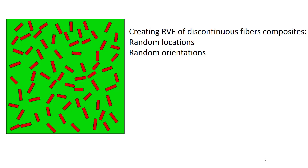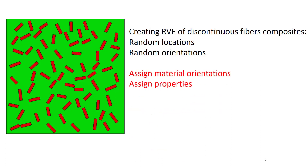Welcome to this video. In this series of videos, we are going to explain modeling an RVE of randomly distributed fiber reinforced composite. In this RVE, fibers have a random position and orientation, and we should have a plan to prevent fiber intersection. In the next video, we will explain how to assign properties and orientation to the fibers. In the third video, basics of applying periodic boundary conditions to the RVE will be explained. Keep watching to create the geometry of the RVE in this video.